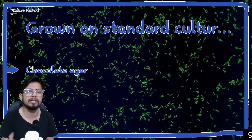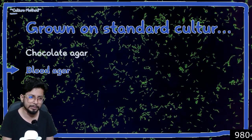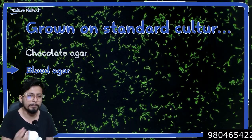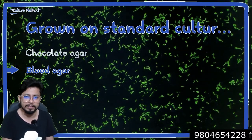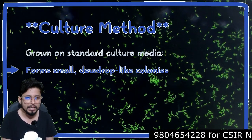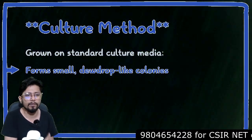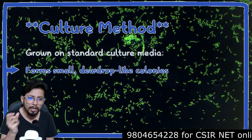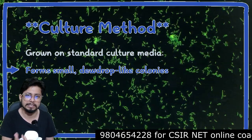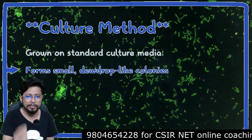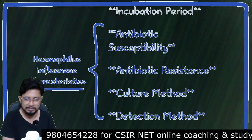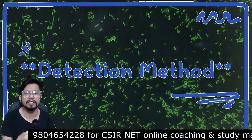Haemophilus influenza can be grown on standard culture media. Chocolate agar and blood agar are media where it can be grown quite easily. It forms small dew-drop-like colonies — that dew-drop structure is a characteristic colony morphology of Haemophilus influenza.